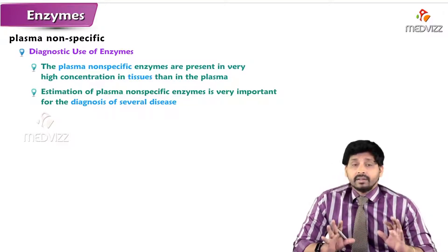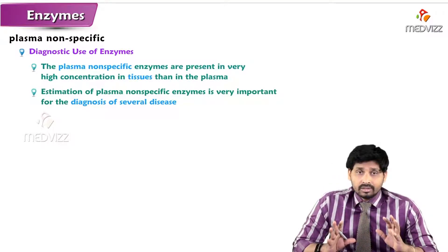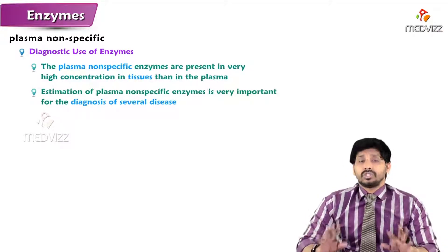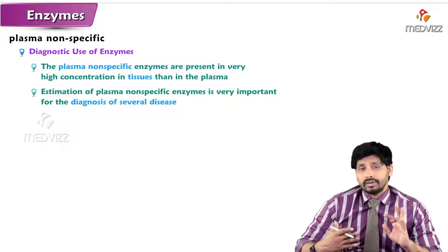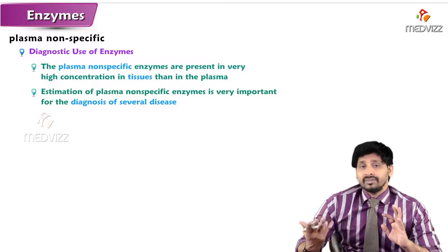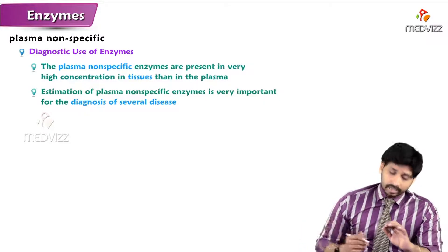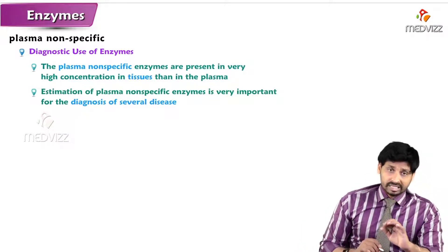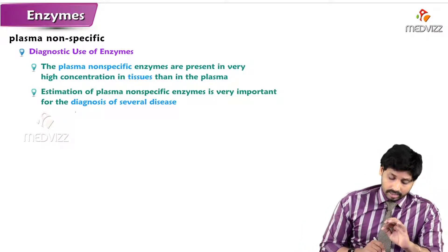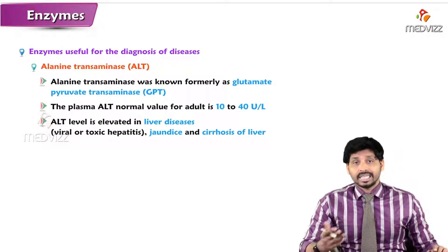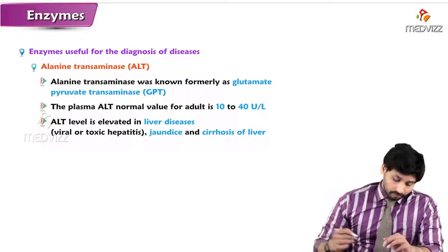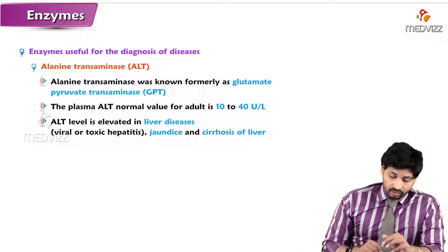Plasma non-specific enzymes are not regularly found in plasma or circulation. Only if there is damage to a tissue or cell do their contents leave the cell and enter the circulation, where high levels will be noted. This indicates some disorder or disease, which is why plasma non-specific enzymes are of interest for diagnosis of several diseases.